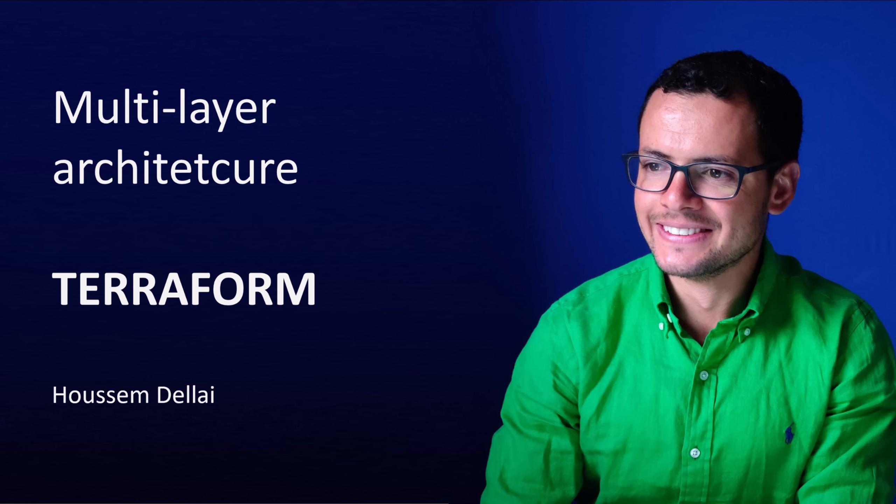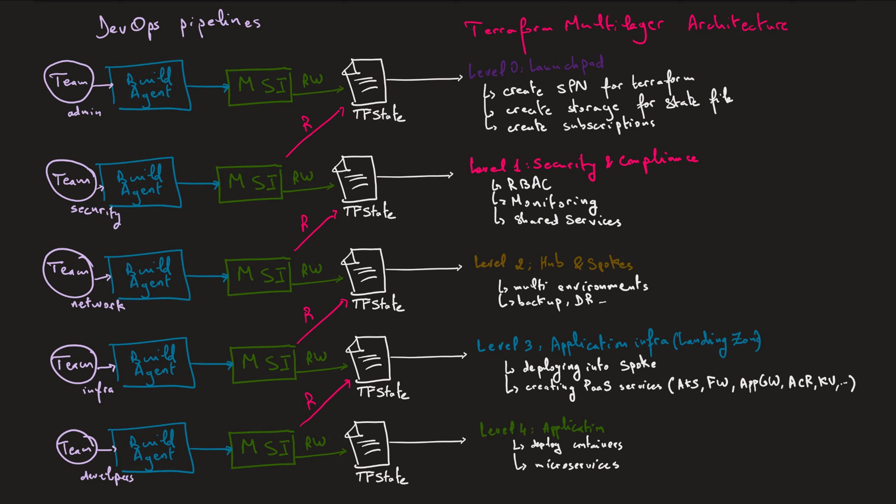Let's learn in this video how to create a Terraform multilayer architecture. In the development lifecycle of a Terraform project, we would have more and more resources created as part of our infrastructure. Thus, we would have more and more Terraform files. Those files will live inside the same folder, and that folder will become monolithic. Having that architecture would make it really difficult to manage things like security, maintainability, and governance. So we'll see how we can solve this issue using the multilayer architecture.